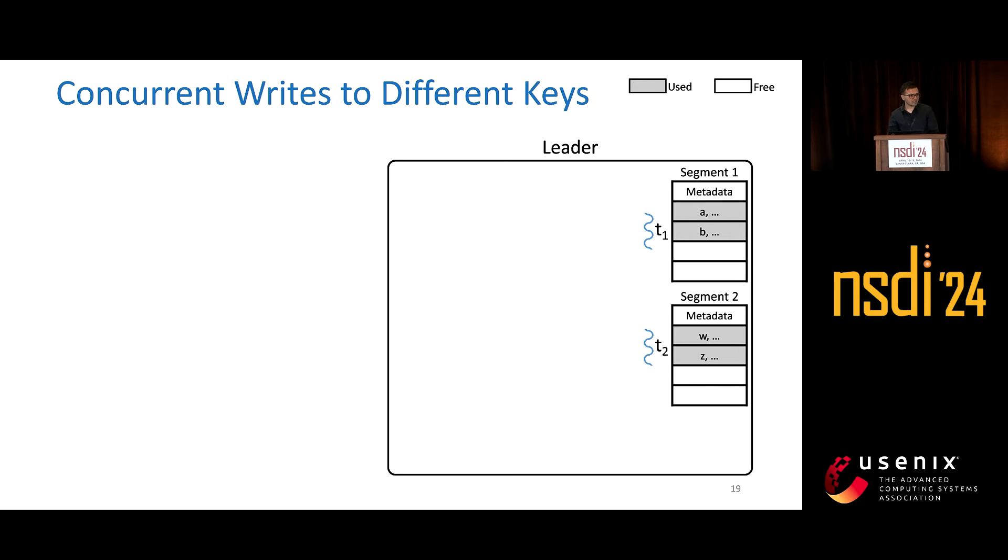Let's take a look at a few interesting scenarios. The first being concurrent writes to different keys, and the second being concurrent writes to the same key, and see how these corner cases are handled.